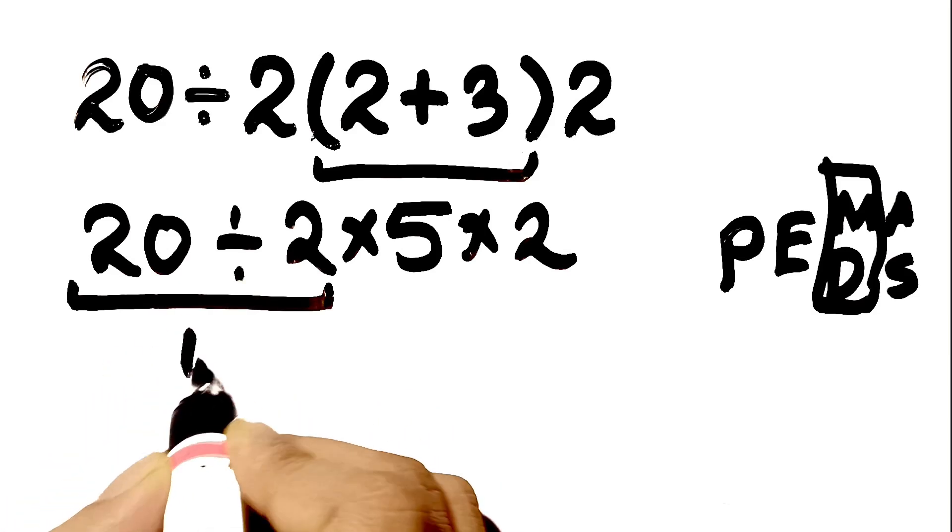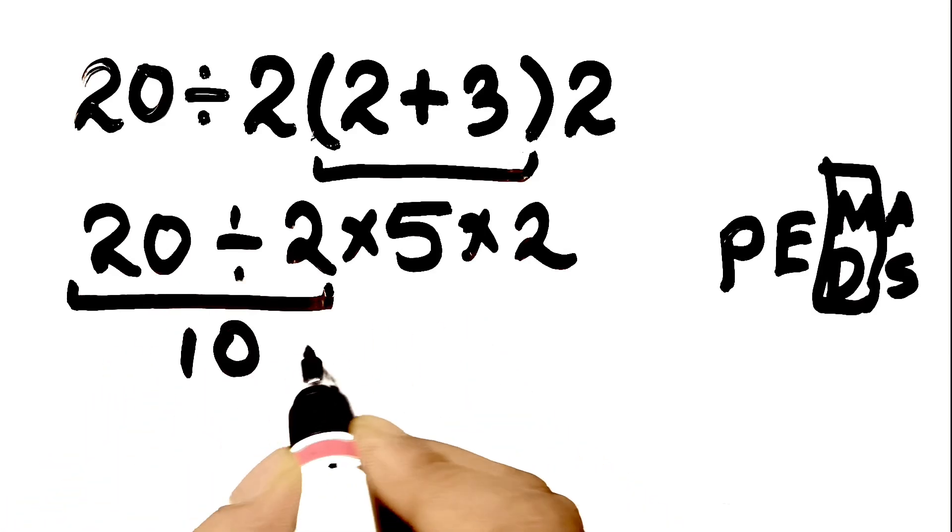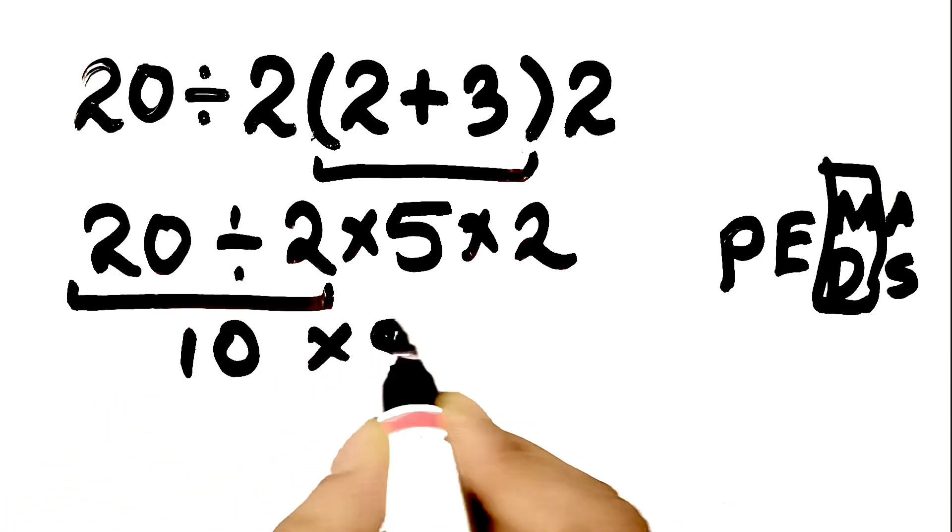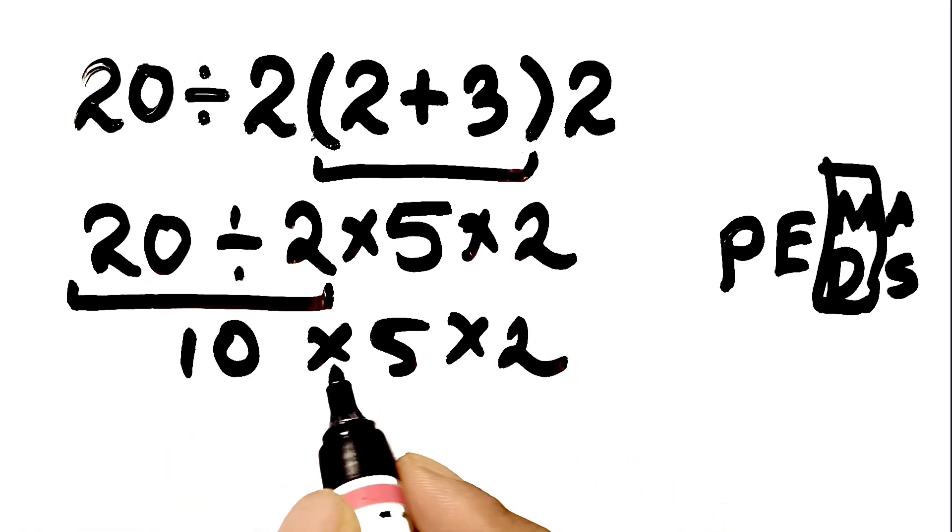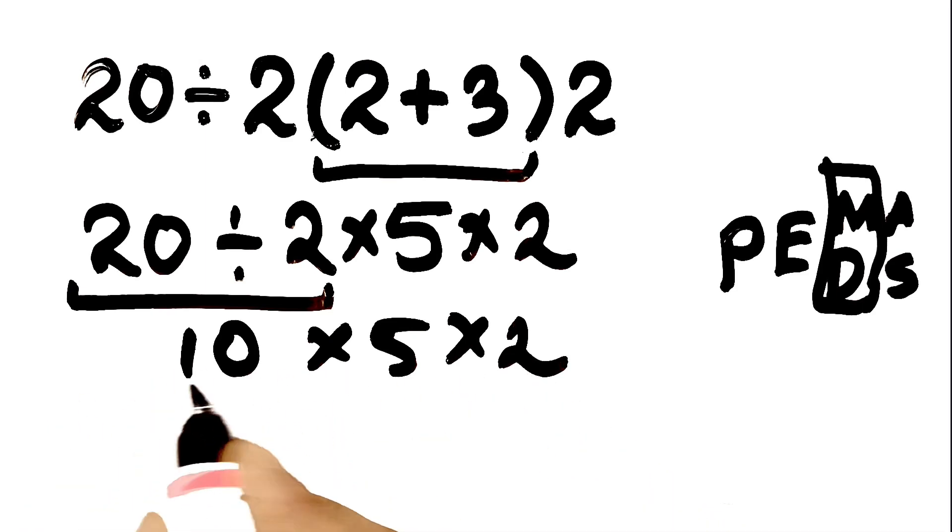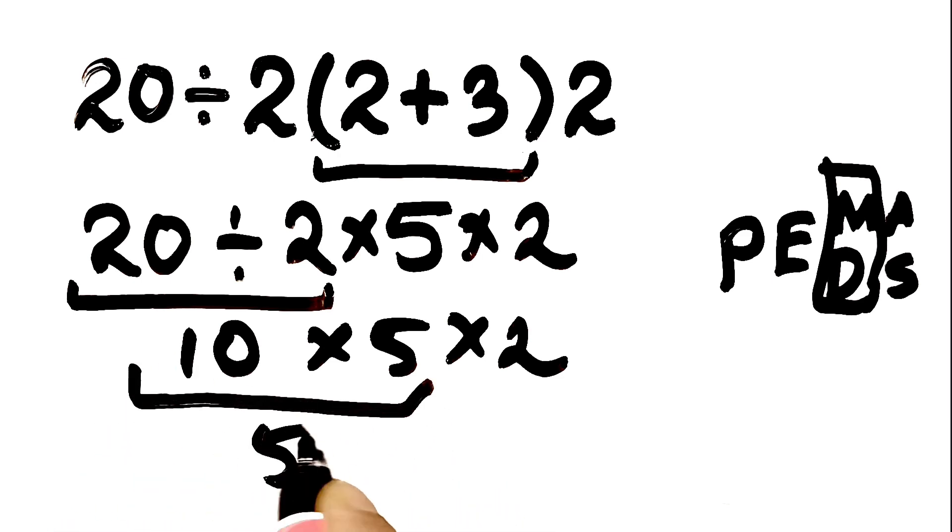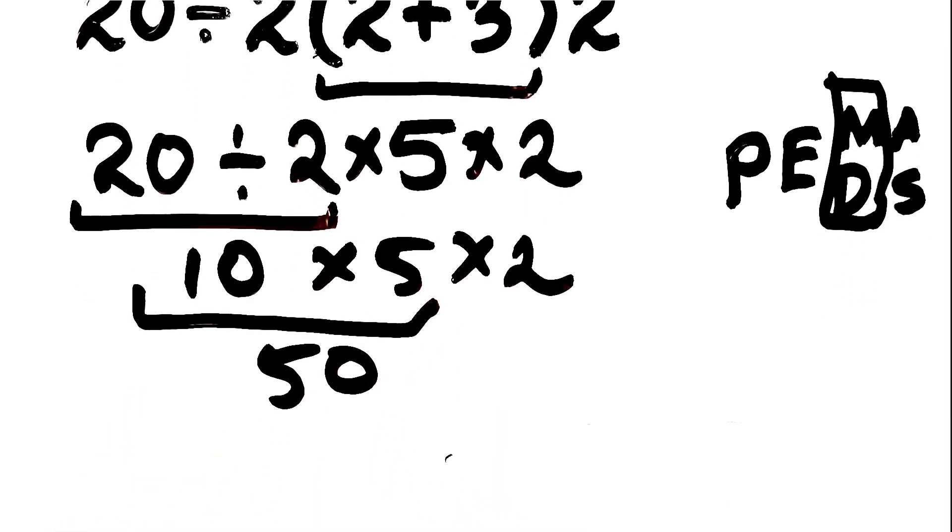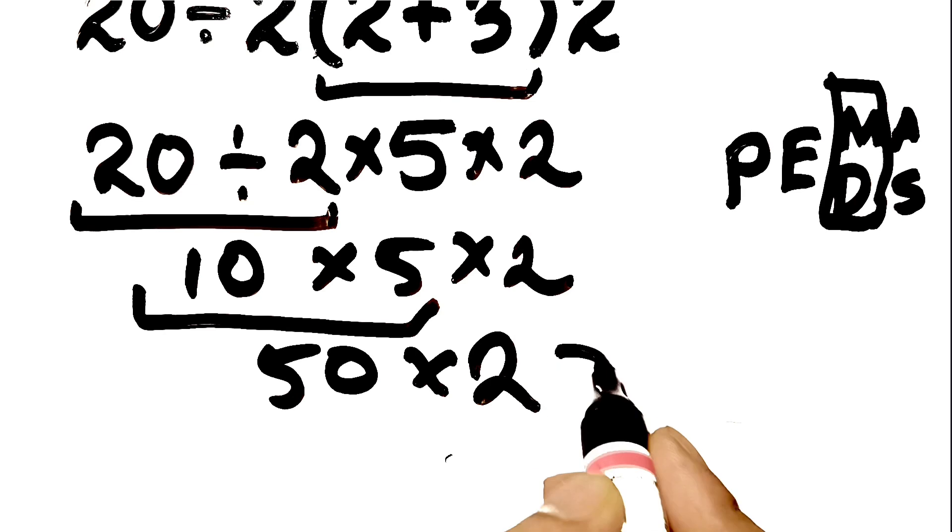20 divided by 2 gives us 10. The expression is now 10 times 5 times 2. Now we only have multiplication, so we continue to work from left to right. 10 times 5 gives us 50. So 50 times 2, which equals 100.